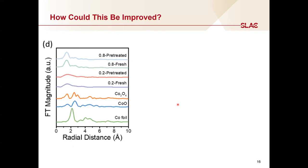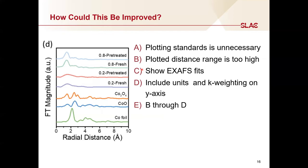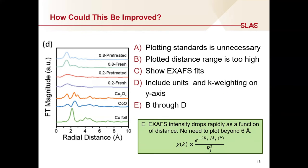Now let's look at some EXAFS examples. Here we're looking at the Fourier transform EXAFS of some cobalt samples in fresh and pre-treated states. The answer is E — B through D. We already talked about basics like showing EXAFS fits and including units and k-weighting. The mistake I want to point out here is the distance range up to 10 Angstroms. Recall from the EXAFS equation that the intensity is proportional to 1/r-squared and also has a term that decays exponentially with r. So there's no need to plot this far out in distance. Plotting up to 6 Angstroms is a good rule of thumb, and in some cases it may be appropriate to plot less.